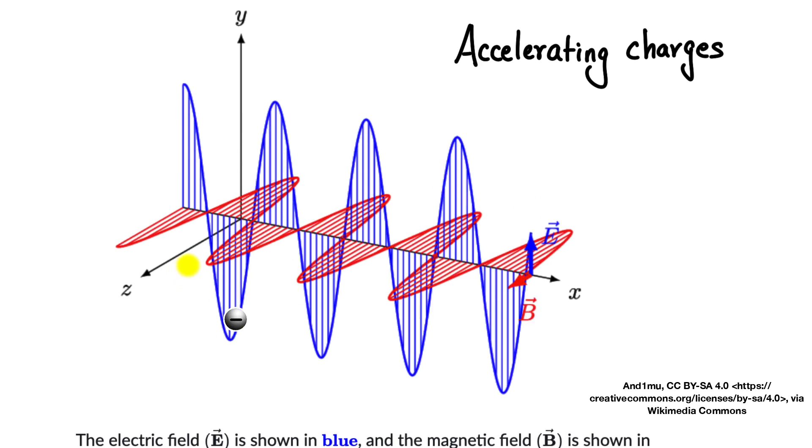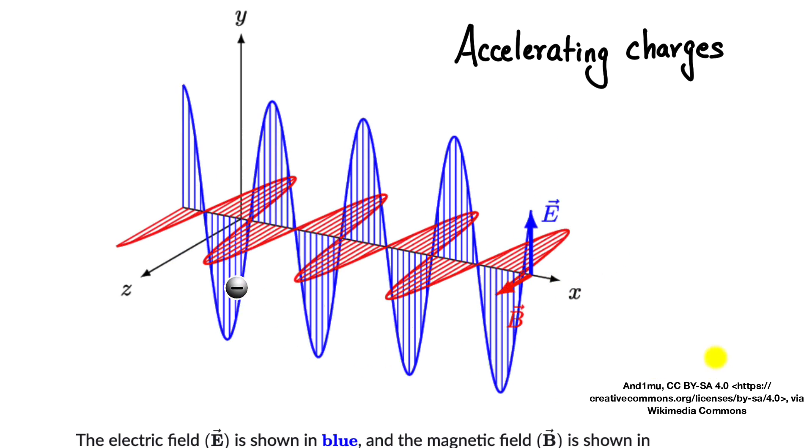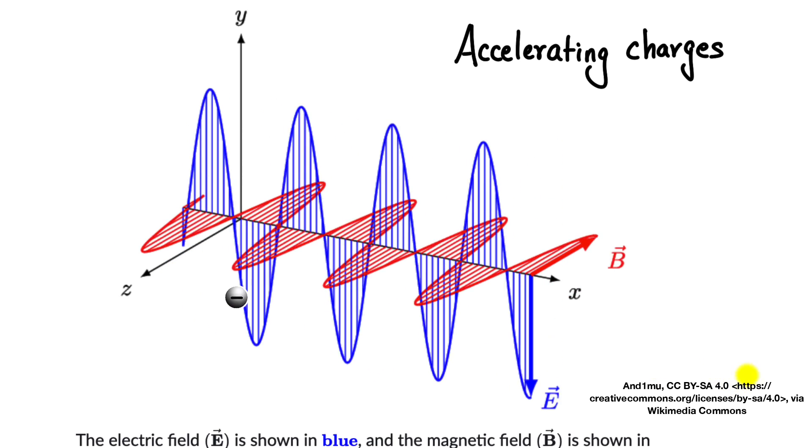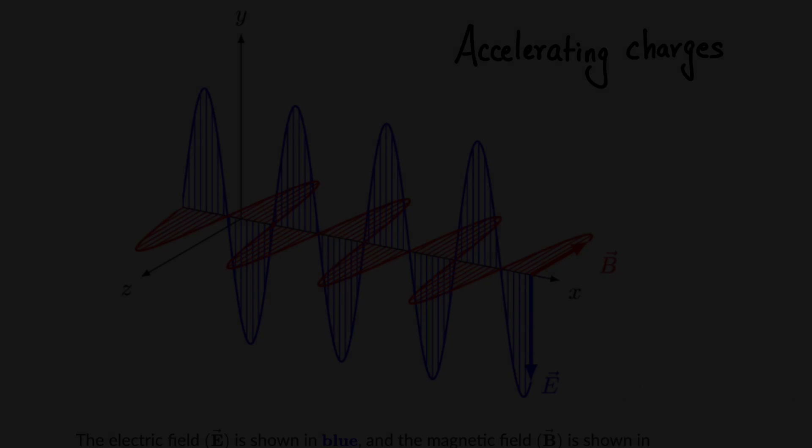If you continuously wiggle an electron up and down, it will continuously keep losing energy as electromagnetic waves. So accelerated charges create electromagnetic waves. Consider the wi-fi antenna, for example — electrons are oscillating up and down very quickly, and because those electrons are charges oscillating, they generate electromagnetic waves which we call radio waves.